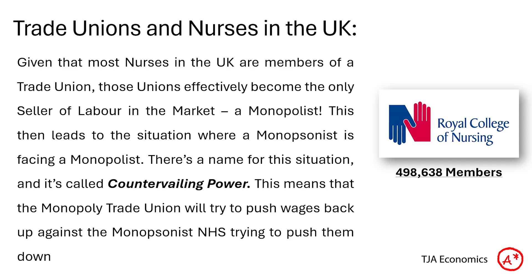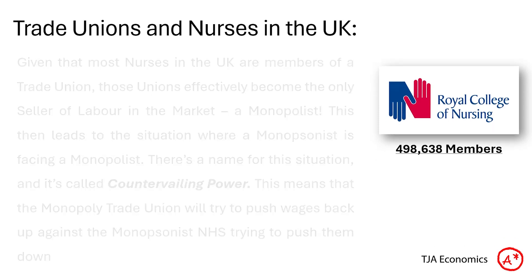This leads to a situation where you have the monopsonist — the NHS — facing a monopolist, the trade unions. There's a name for that situation: countervailing power. This means that whilst the monopsonist will try to push wages down, the monopoly trade unions will work to push them back up. And again we can show this diagrammatically.